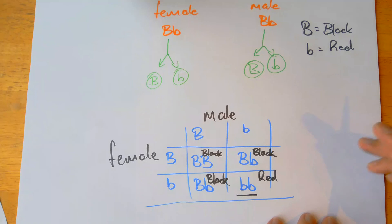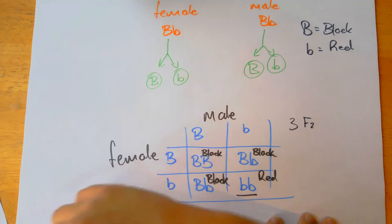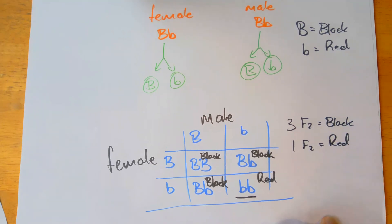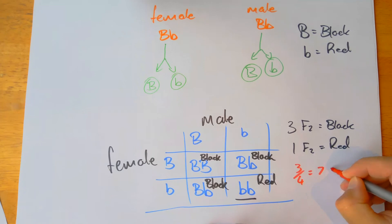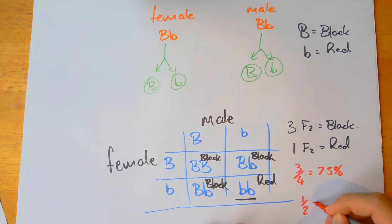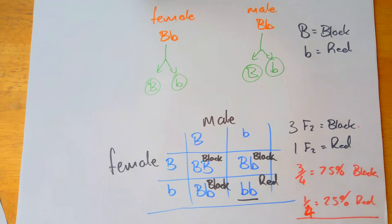So three of the F2 generation are black — it's the second filial generation, interbred after the first filial generation — and one F2 will be red. That gives us three over four: 75% chance of a black coat, and one over four: 25% chance of a red coat. The question asked for the probability of a red coat, so the answer is one in four — a 25% chance. That's the questions for page 159.